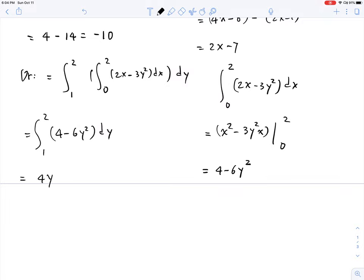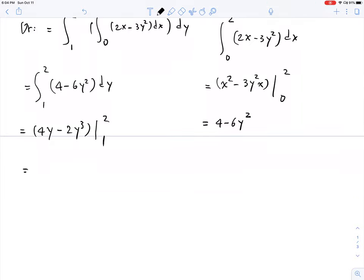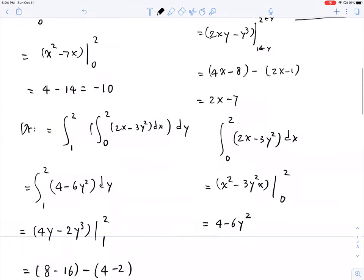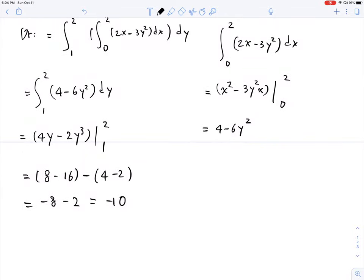And then we integrate, so this is going to be 4y minus 2y cubed, right? We have simple integral, so we can find the anti-derivative rather easily. And then we plug in value, so this is going to be 8 minus 2 times 8, that's going to be 16, okay? And then subtract 4y is minus 2, okay? So this one is going to be negative 8, and this one is going to be negative 2, and then we have negative 10. You see, we are very lucky we get the same answer, but it's guaranteed we should have the same answer.